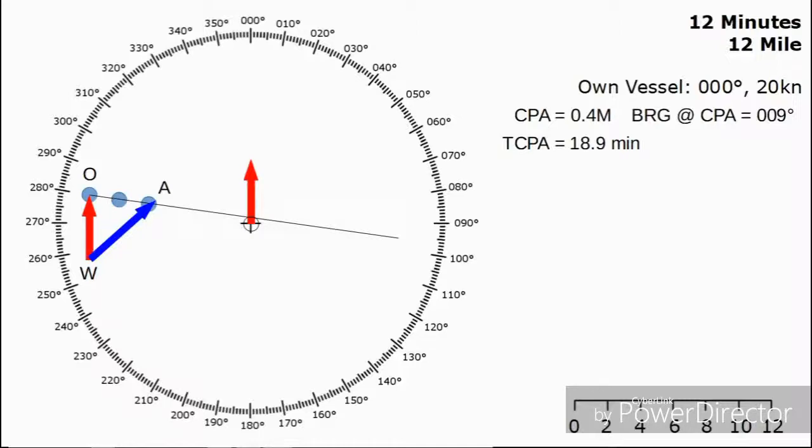And this vector contains information about the target vessel's course and speed. We can transpose it into the center and read straight off to get their course, 048 degrees.